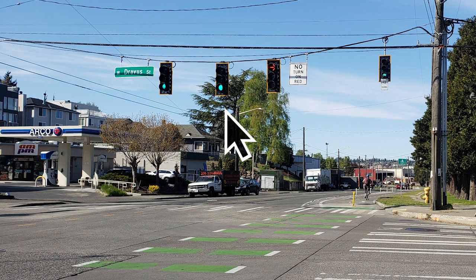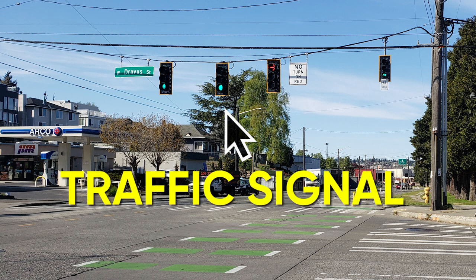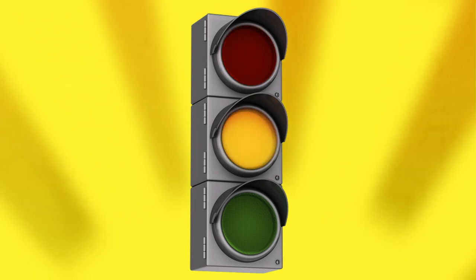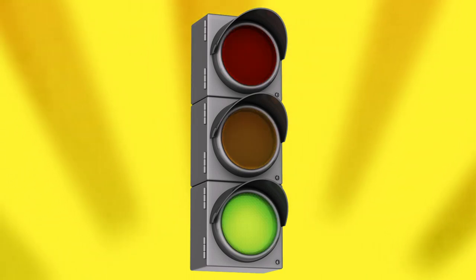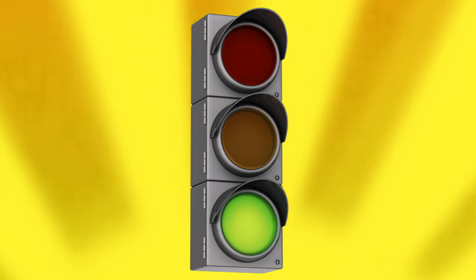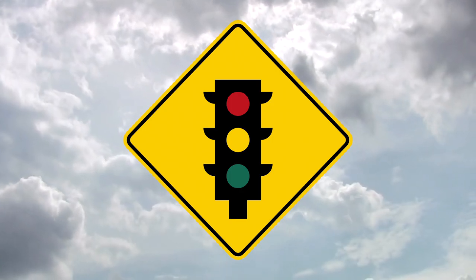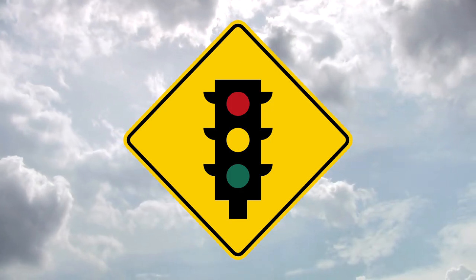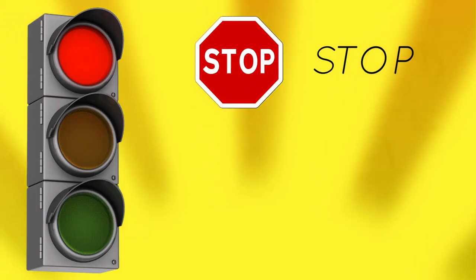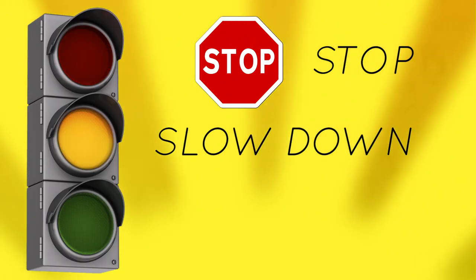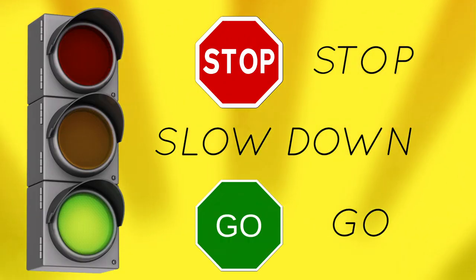What about the signal that controls traffic? You guessed it! It's called a traffic signal, which typically has red, yellow, and green lights for controlling traffic at road intersections and crosswalks. Rollers on the street, such as bicyclists, should follow these signals as if they were cars: red means stop, yellow means slow down and prepare to stop, and green means go.